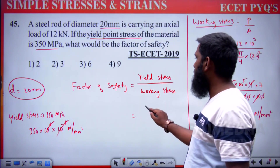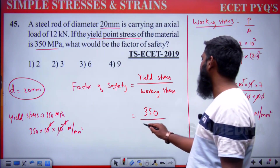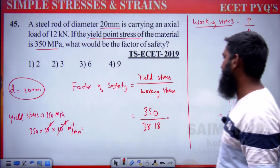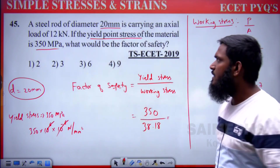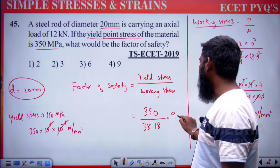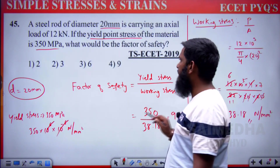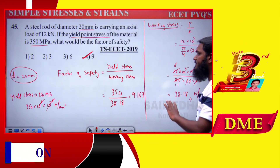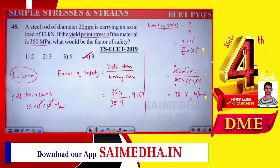Factor of safety = 350 / 38.18 ≈ 9.167. Checking options: approximately 9. Fourth option is correct — factor of safety = 9.